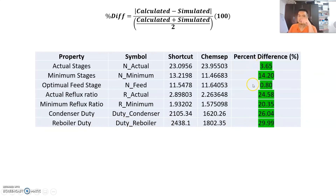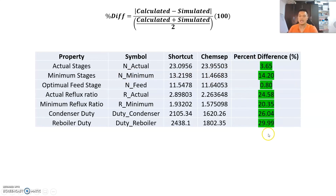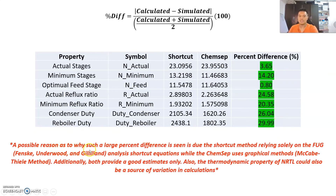The reason the actual stages and optimal stage have a very low percent difference is because in the ChemSep column I used data from the shortcut column so that the simulation could occur. However, for the rest of the data they are their own individual values. The percent difference is quite high. A possible reason for such a large percent difference is due to the shortcut method relying solely on the Fenske-Underwood-Gilliland shortcut equations, while ChemSep also uses graphical methods in conjunction with these analysis methods. Additionally, both provide a good estimate only.